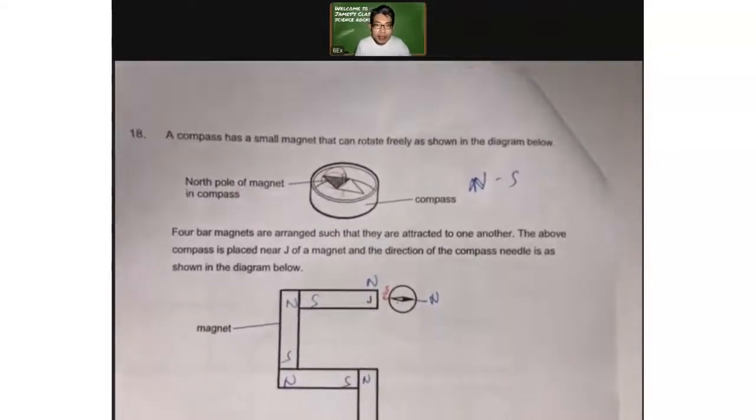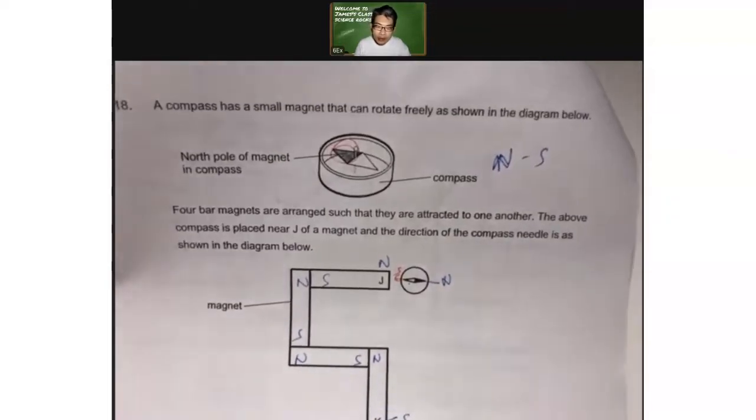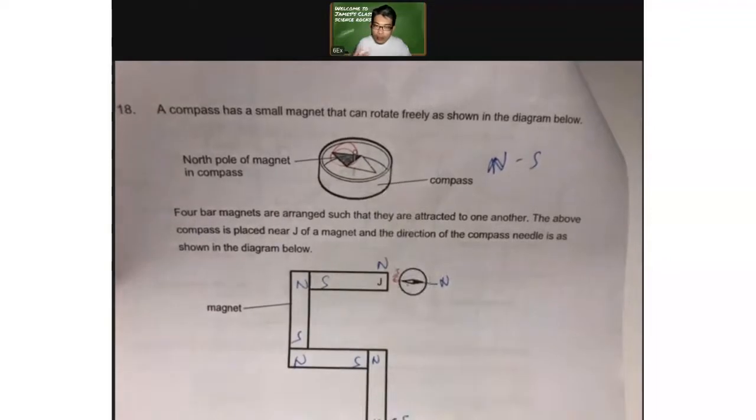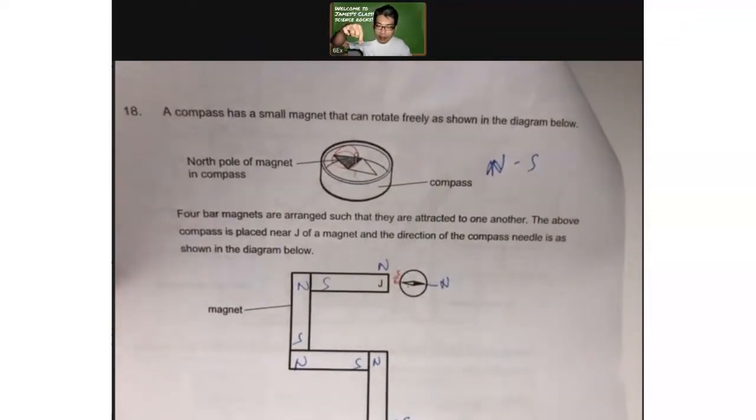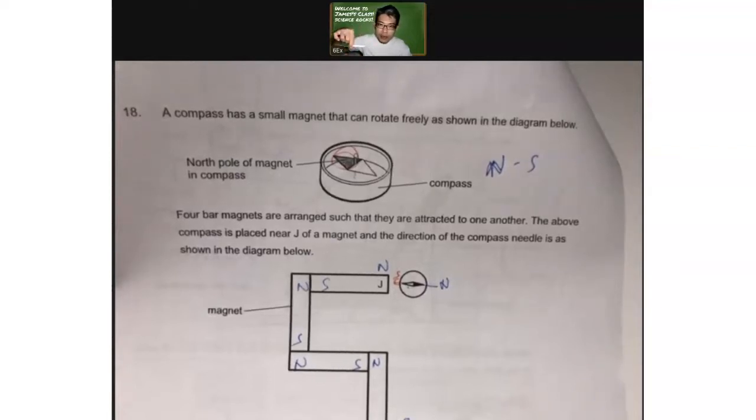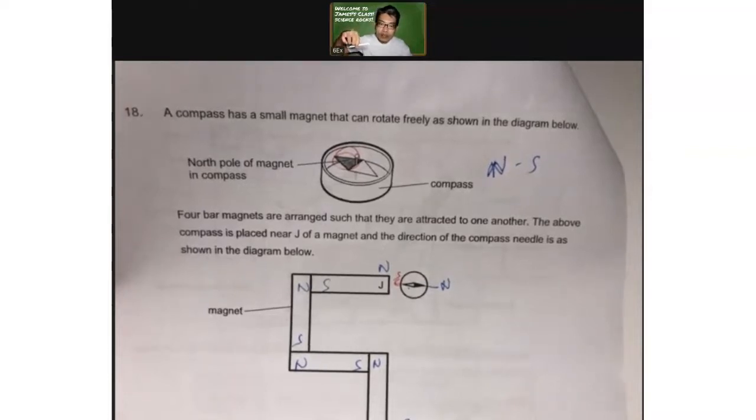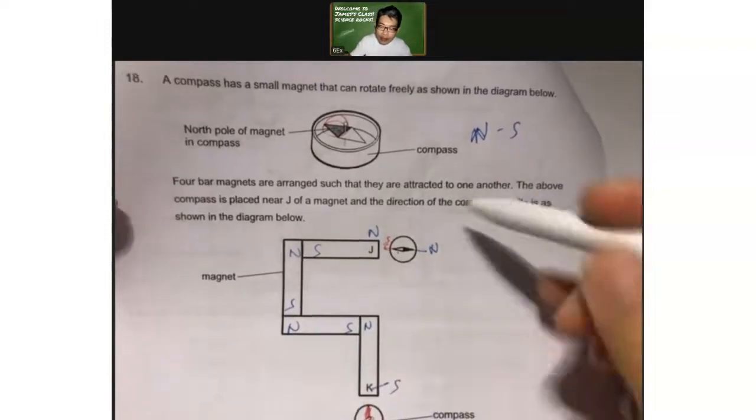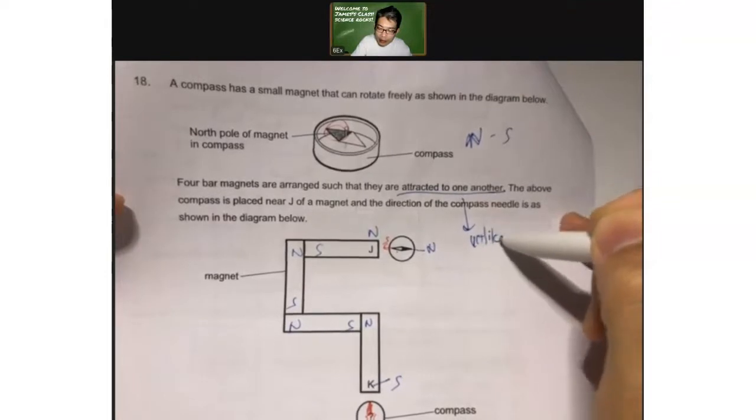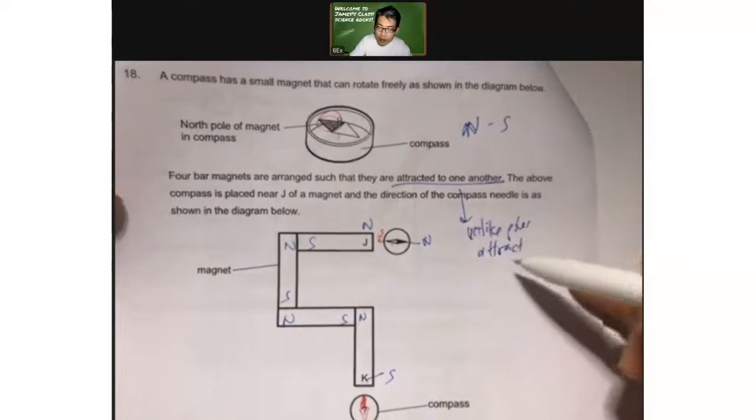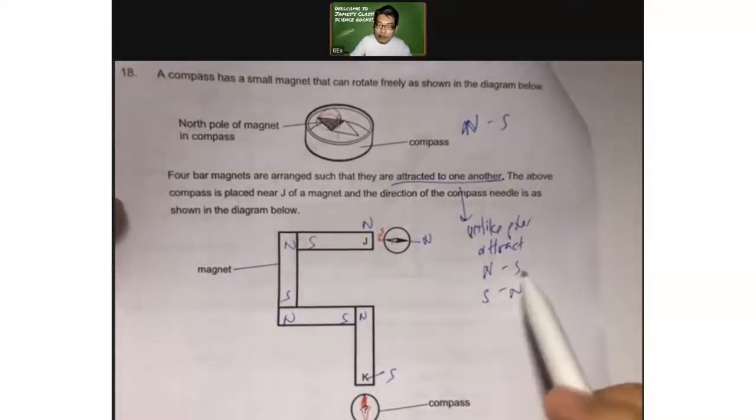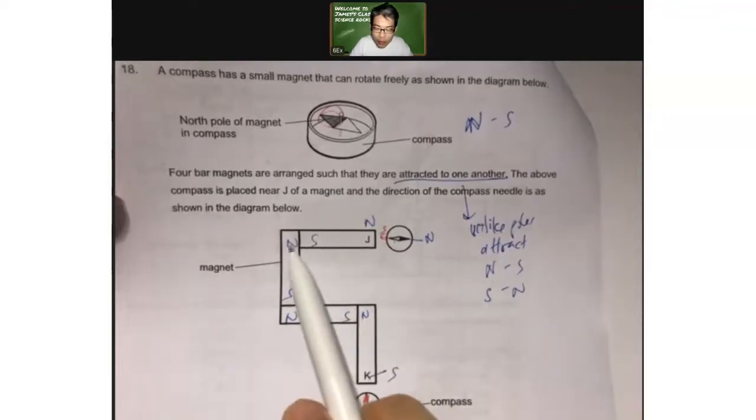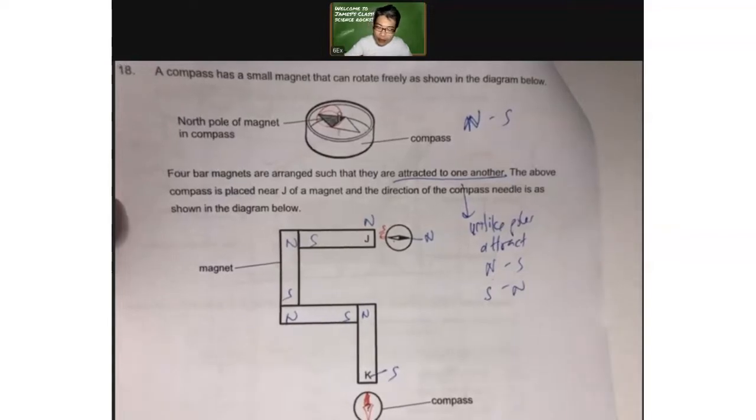Next one, question 18. So a compass has a small magnet that can rotate freely as shown in the diagram below. So this itself is a magnet and this is the north pole of the magnet in the compass. This will be the south pole. As just a quick recall for you, if you hang a bar magnet and on a retort stand, you just tie a string to it and let it swing on its own for a while, it will come to a stop and you will point in a certain direction, and you call it the north-south direction. Now, four bar magnets are arranged such that they are attracted to each other. And attracted means that you know that unlike poles attract. And unlike poles means north and south, south and north are unlike. They are different. That's why it's called unlike. Like poles will repel.